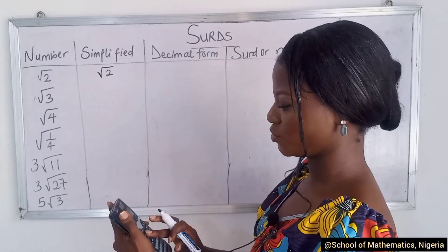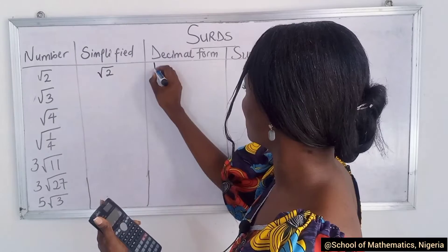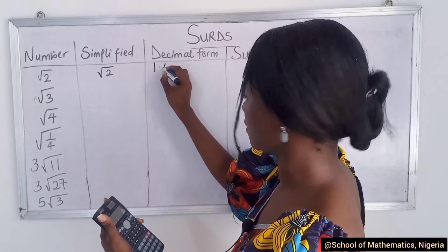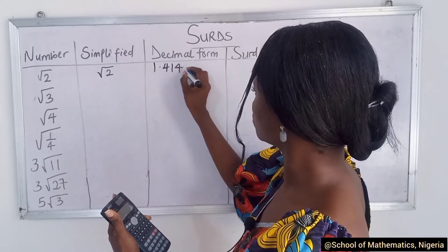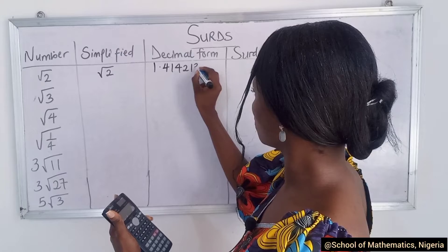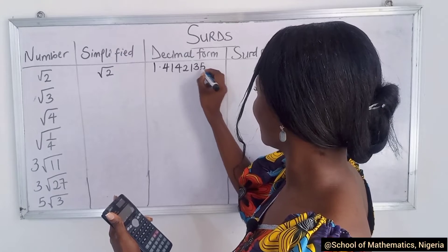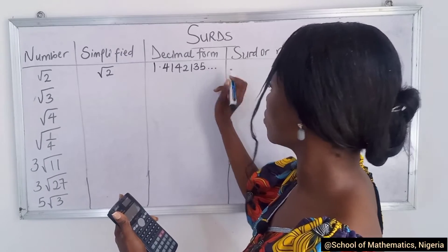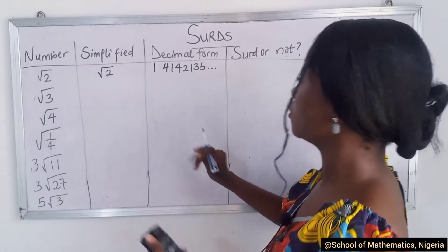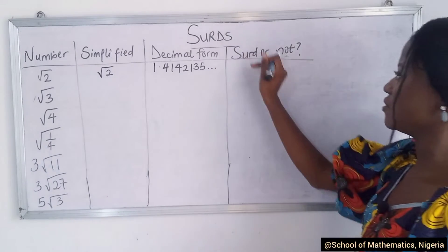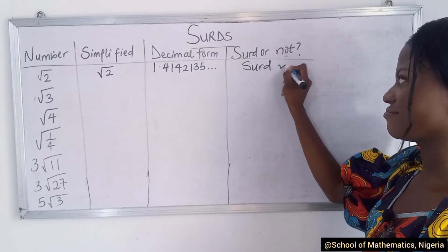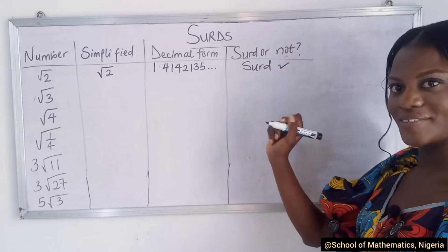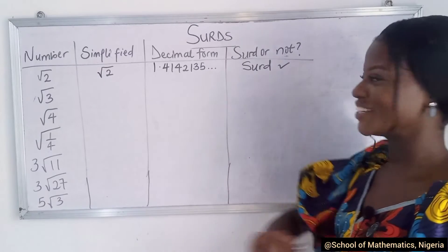Let's work out the decimal form of √2 together: it's 1.4142135... and it just continues. So what does this tell us? It's a surd. Check!